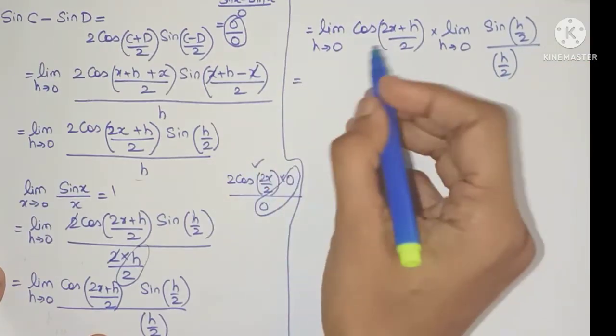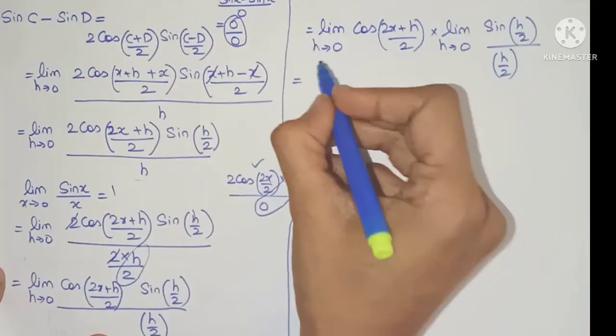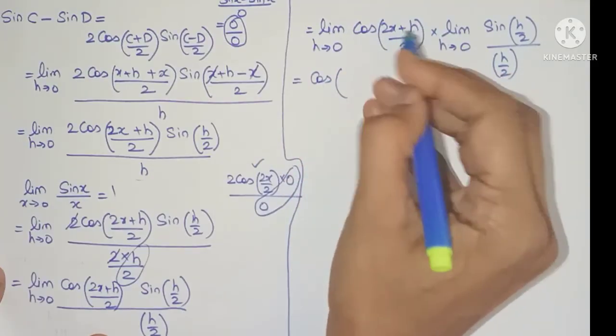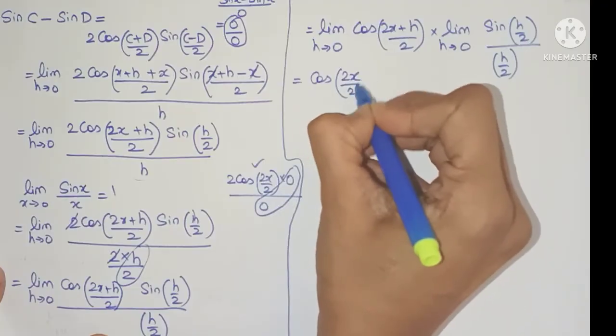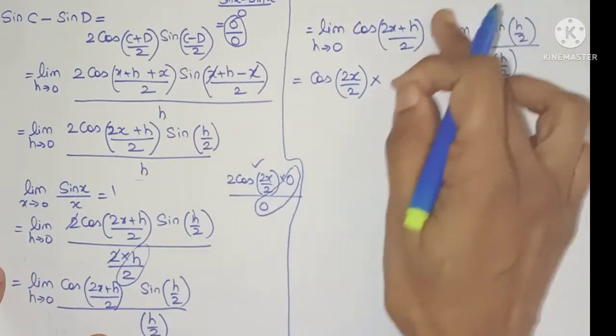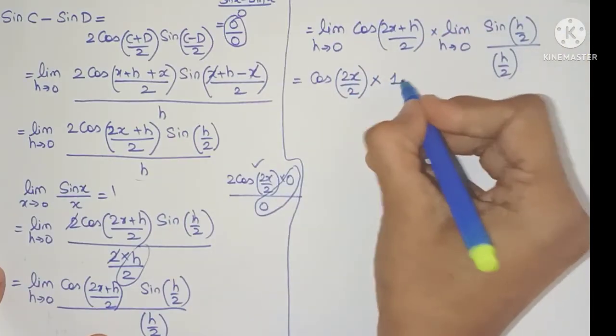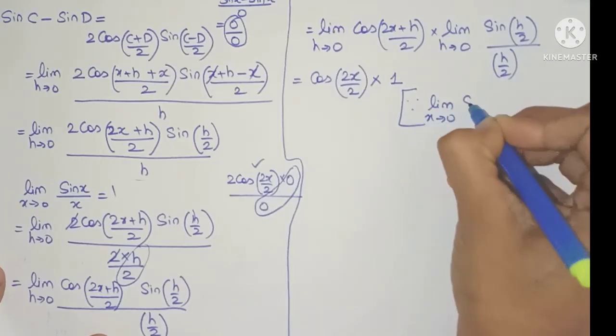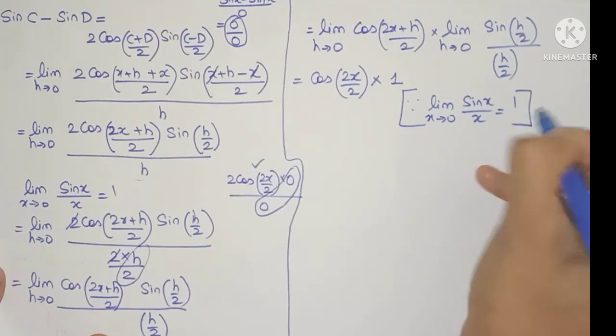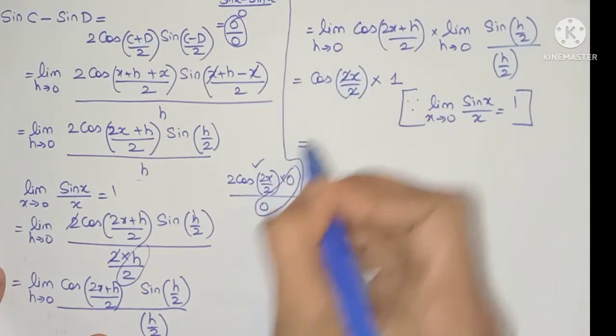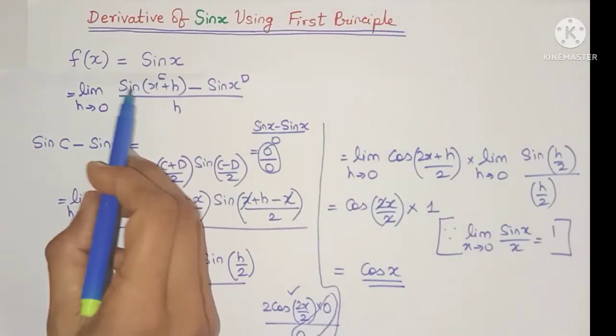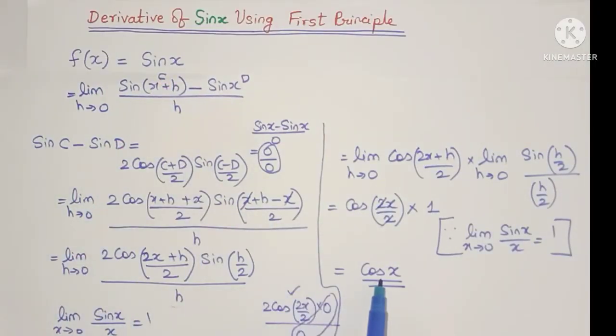Now we can apply the limit. So when I apply h tends to 0, I'll get cos of, now h becomes 0 so 2x divided by 2, into now this whole expression will become 1, and the reason is limit x tends to 0 sin x divided by x equals 1. So now 2 and 2 will get cancelled. I'll get cos x and that's how the derivative of sin x is cos x.